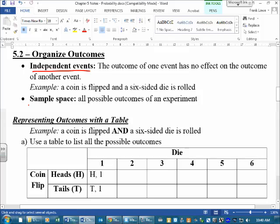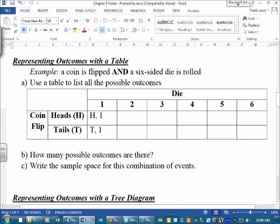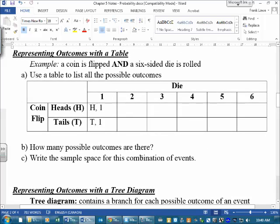I'm going to come back to sample space once we've worked through some of these. So this is the example we're going to look at. And when you're organizing your outcomes, we're going to use a table or a tree diagram. This first one is a table.